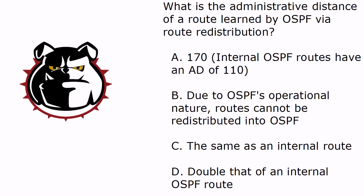Final question: what is the administrative distance of a route that's learned by OSPF via route redistribution? In the CCNA, you're not going to be doing a lot of hardcore route redistribution, but it's good to know the fundamentals. Is it going to be 170, the same as an internal route, double that of an internal route, or can we just not do that?